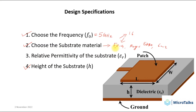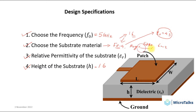Roger materials come in different types like 5880 and 6002, having a relative permittivity (epsilon) value of around 2.2 or 2.3 with very small thickness. For FR4, the standard thickness is 1.6 mm, though different thickness levels are available. The relative permittivity of FR4 is around 4.3. This has an impact on antenna performance — the epsilon value and thickness of each material affect the microstrip antenna design.